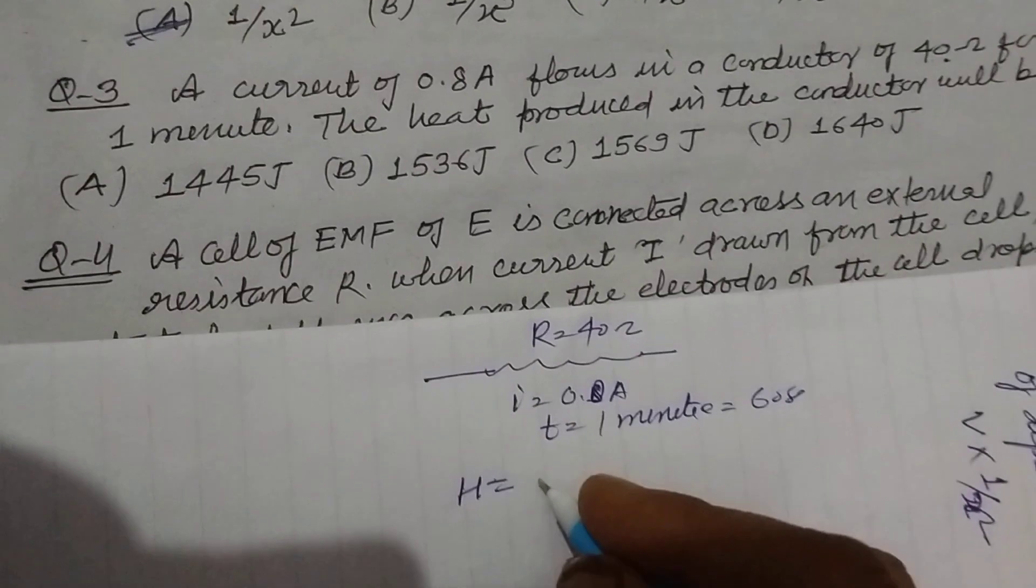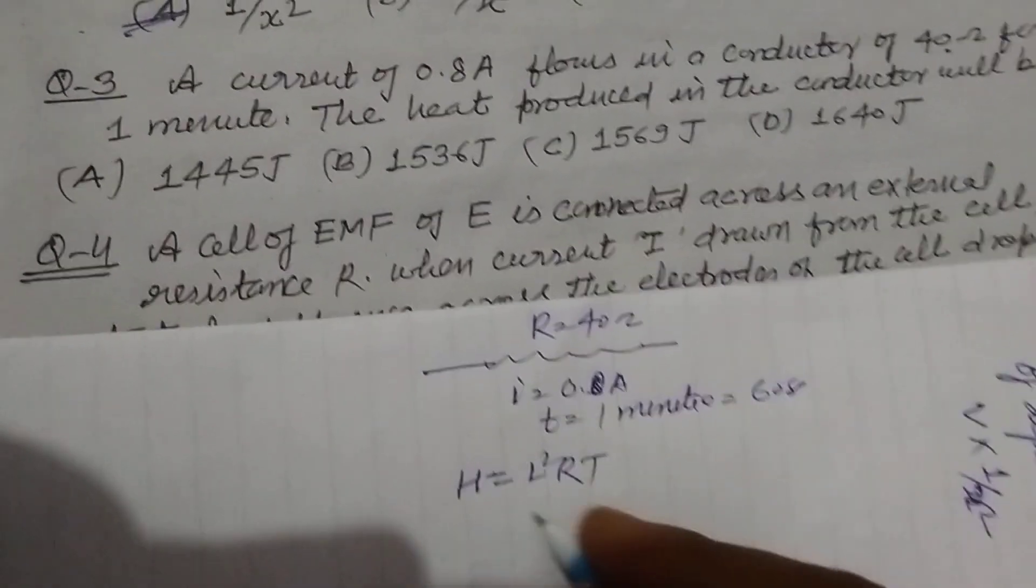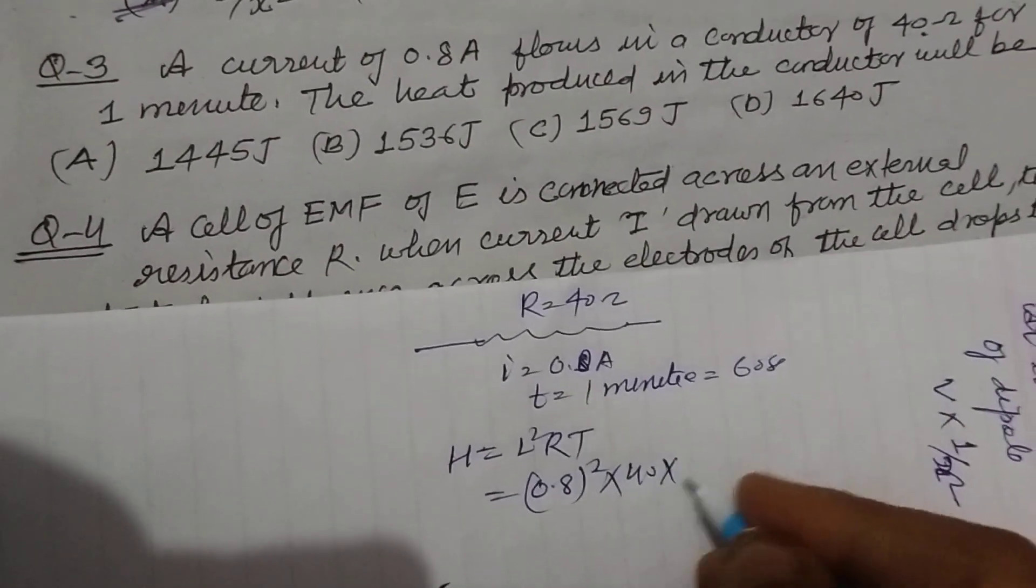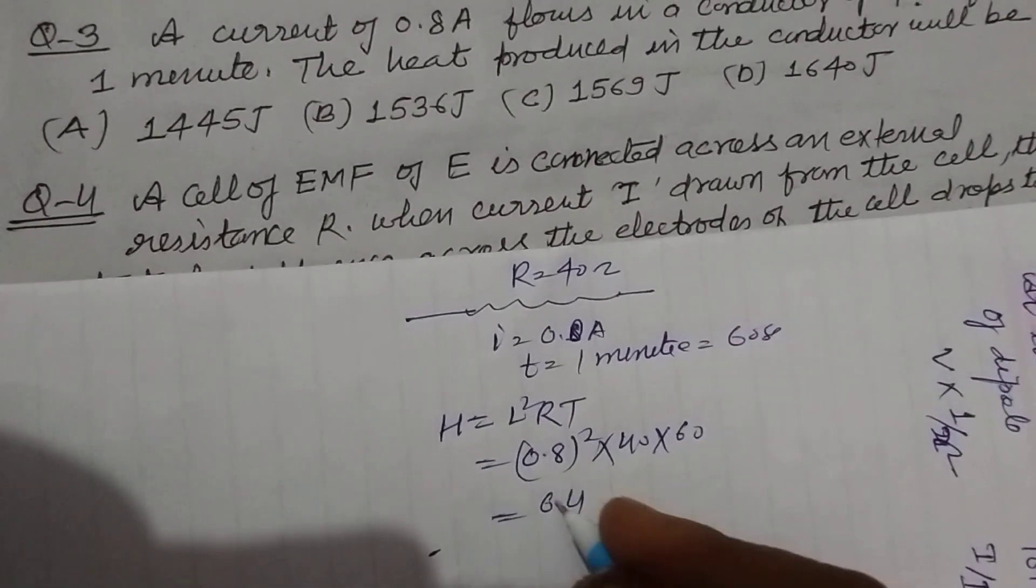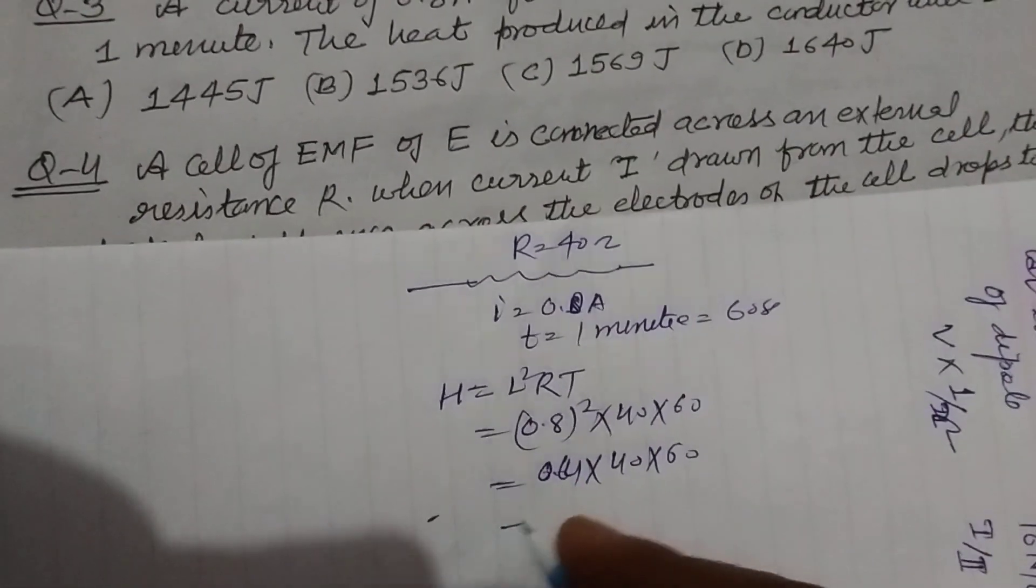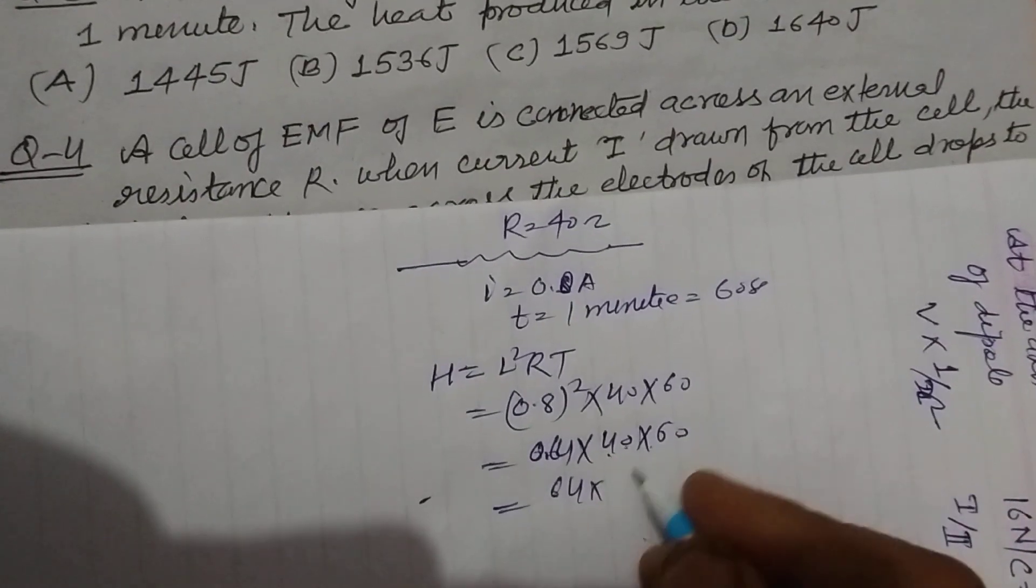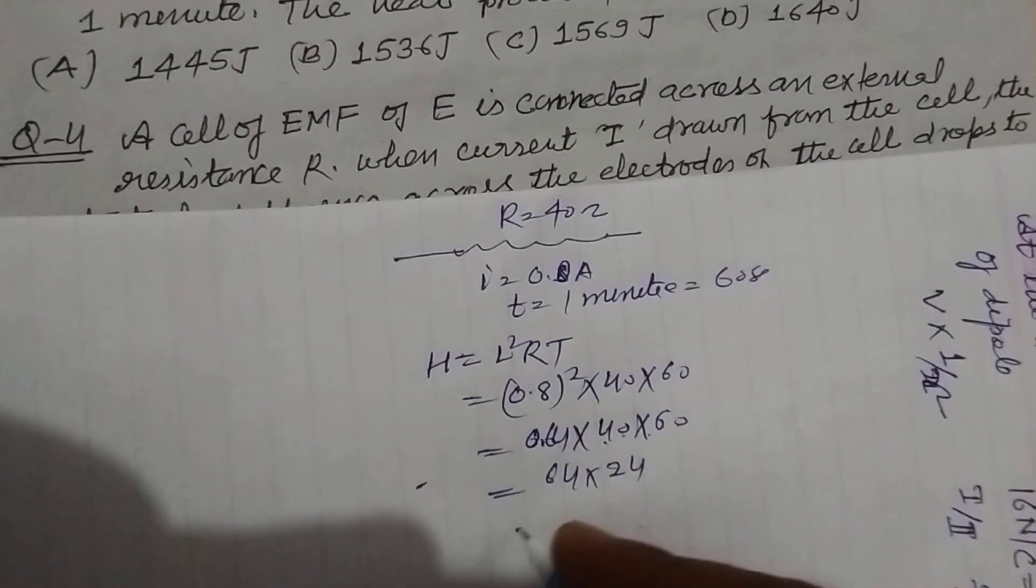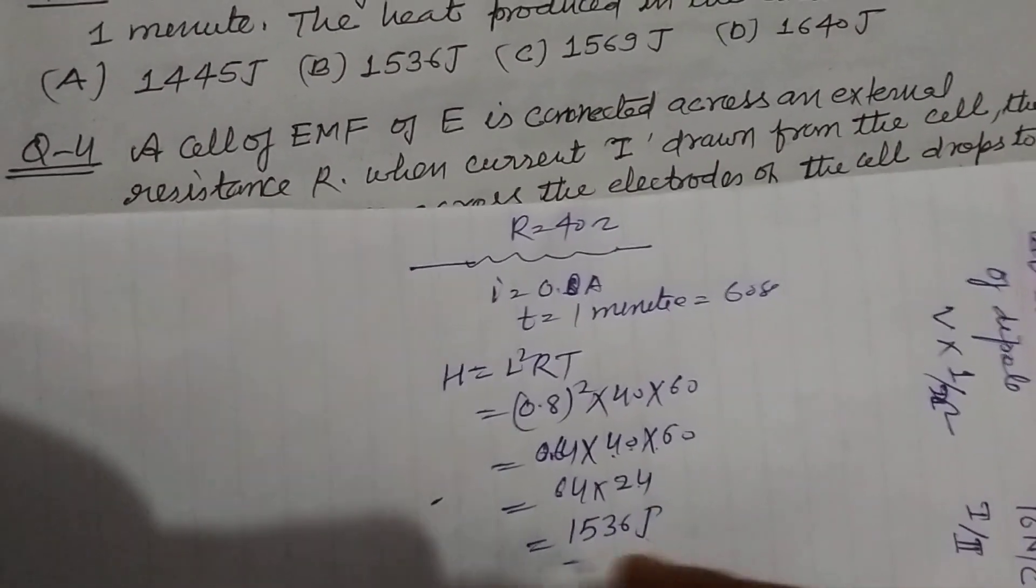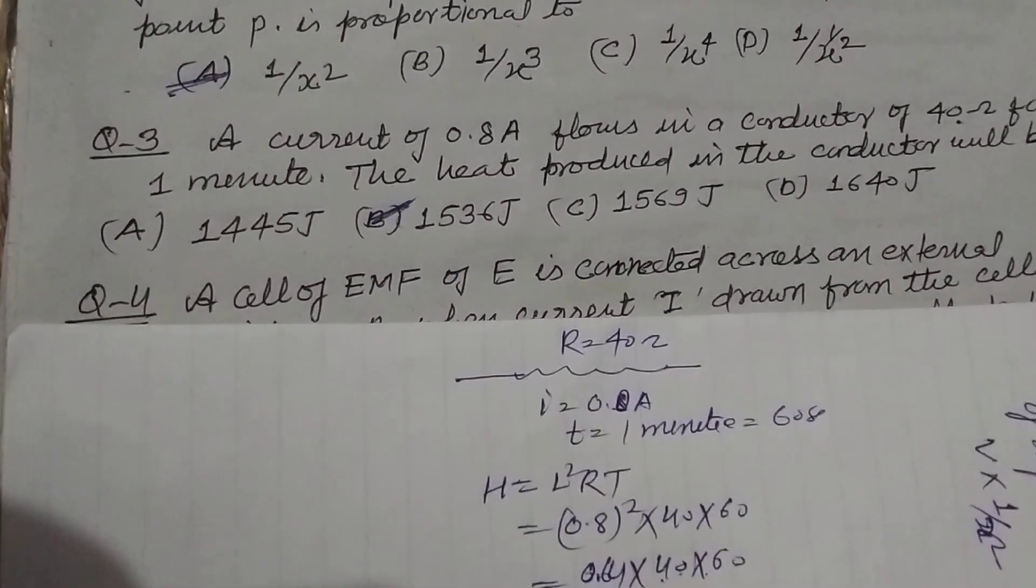So you know that H equals I²RT. So I is 0.8², R is 40, and T is 60. So this is 0.64 into 40 into 60. The decimal removed by 2, so 64 into 4 into 60. When we multiply it, we got 1536 joules. So answer of this question is B, 1536 joules.